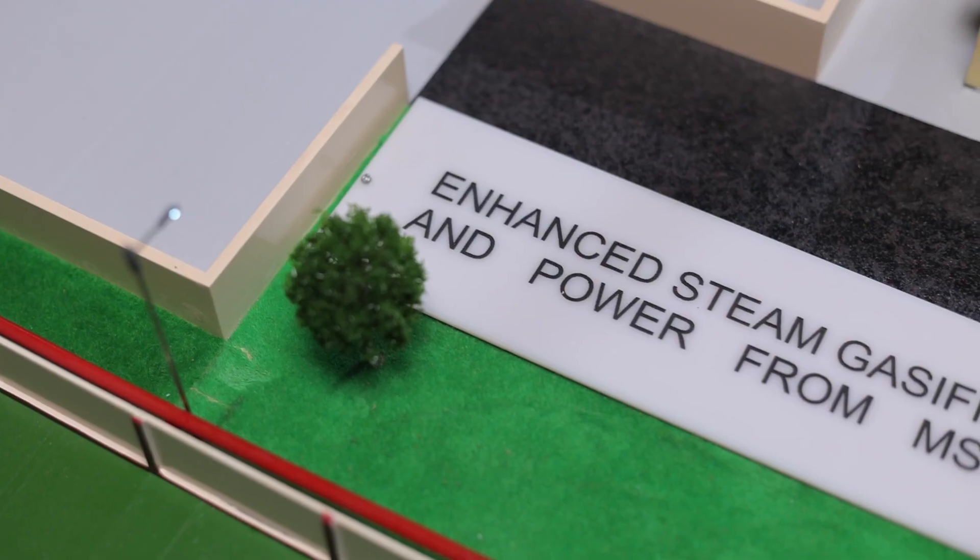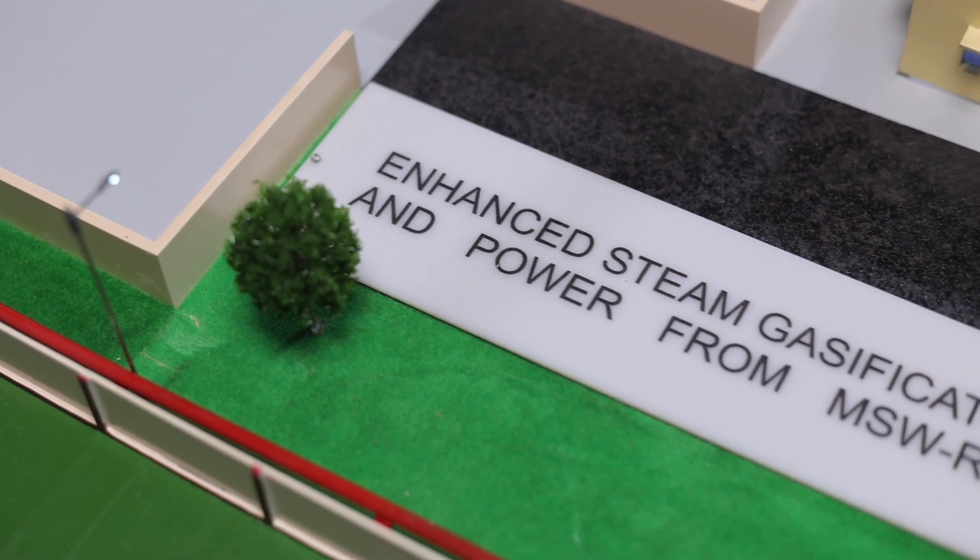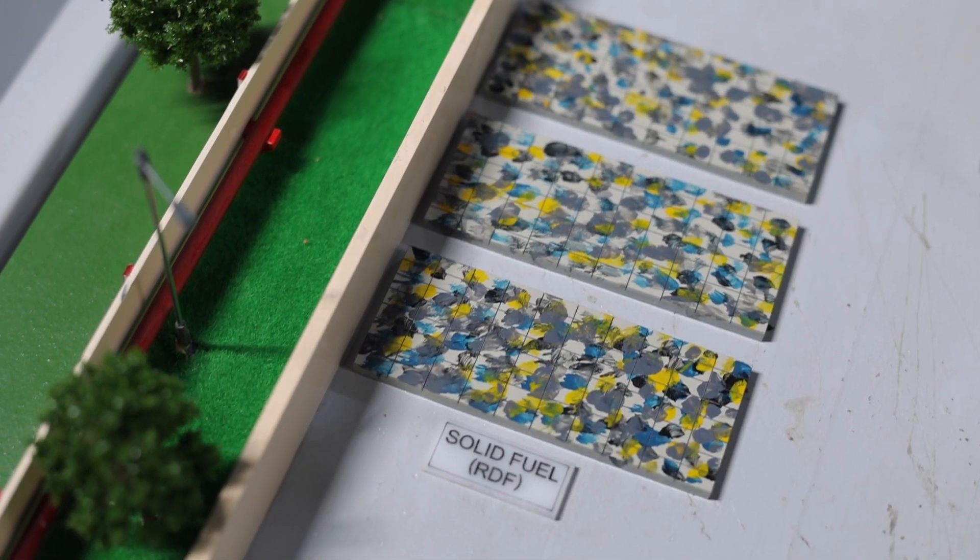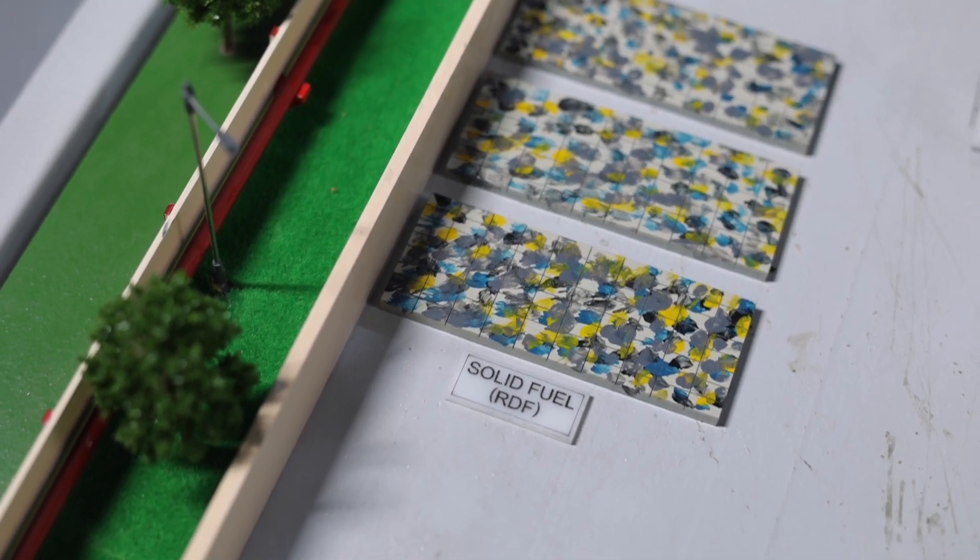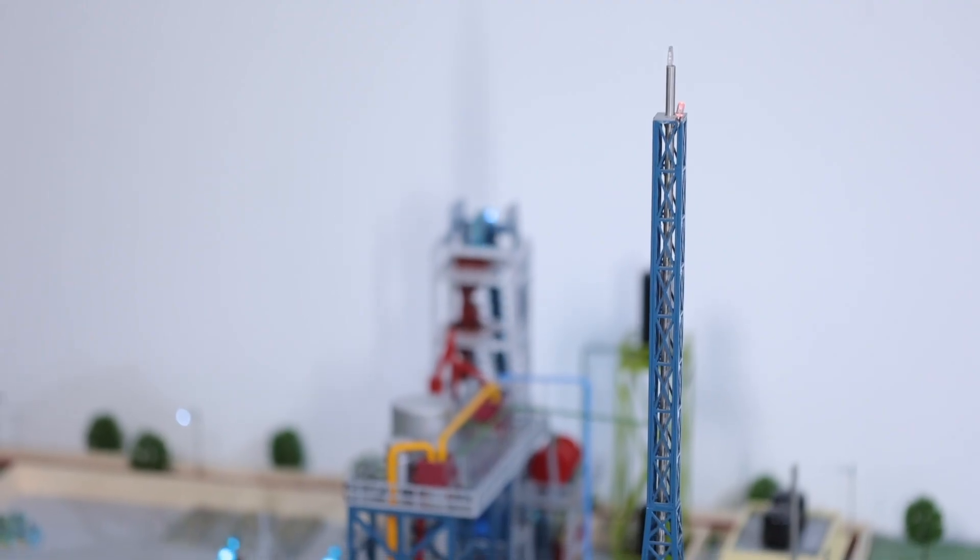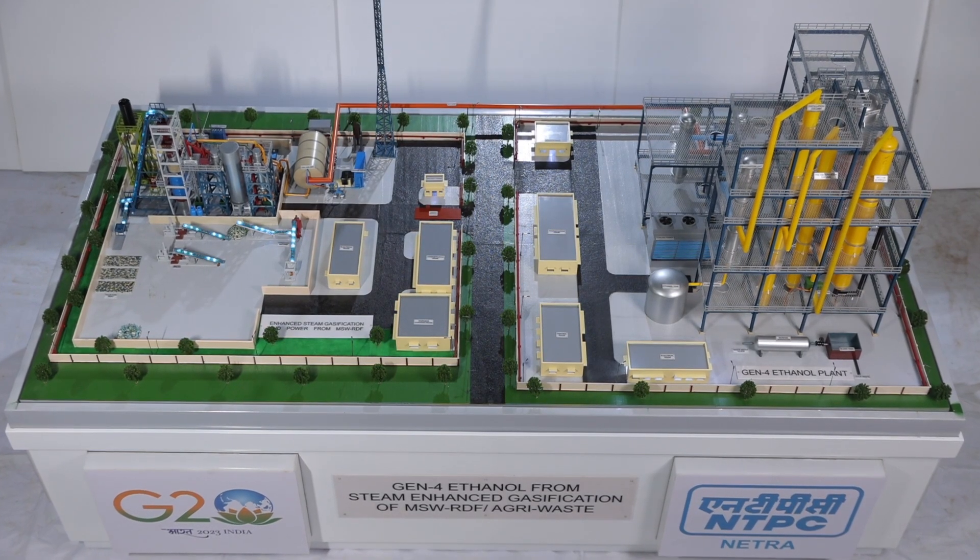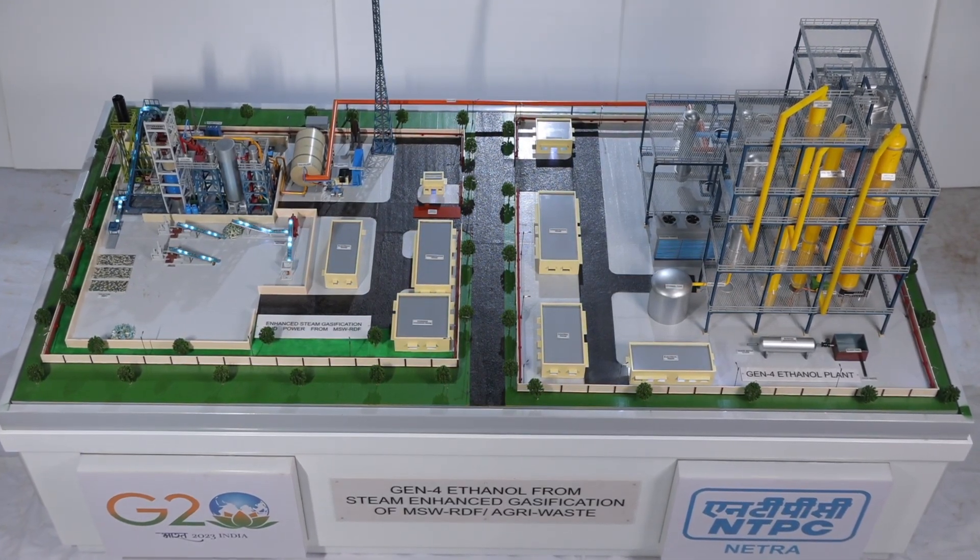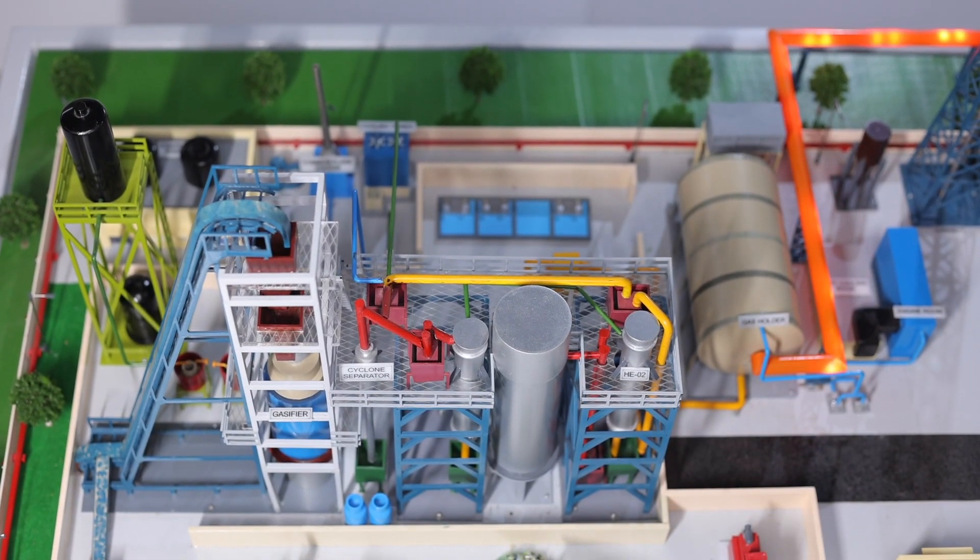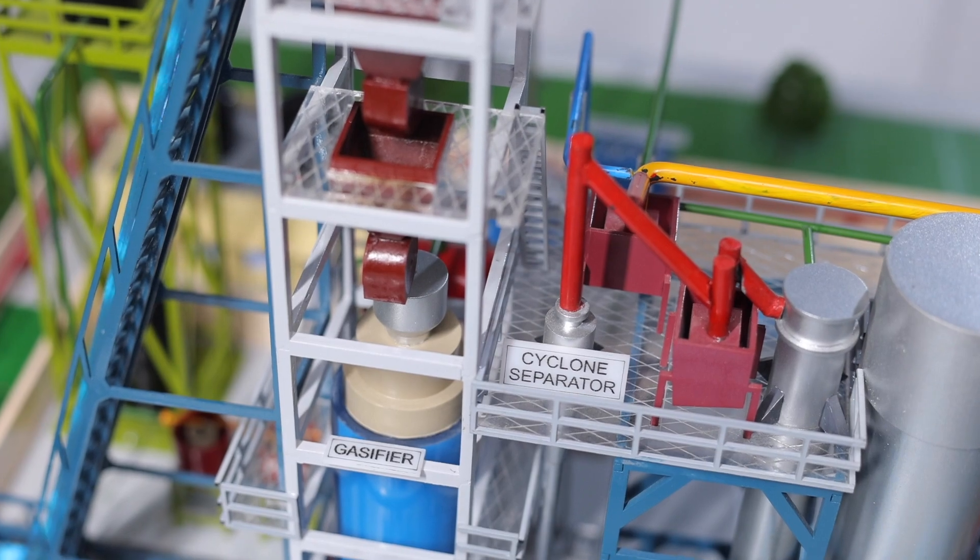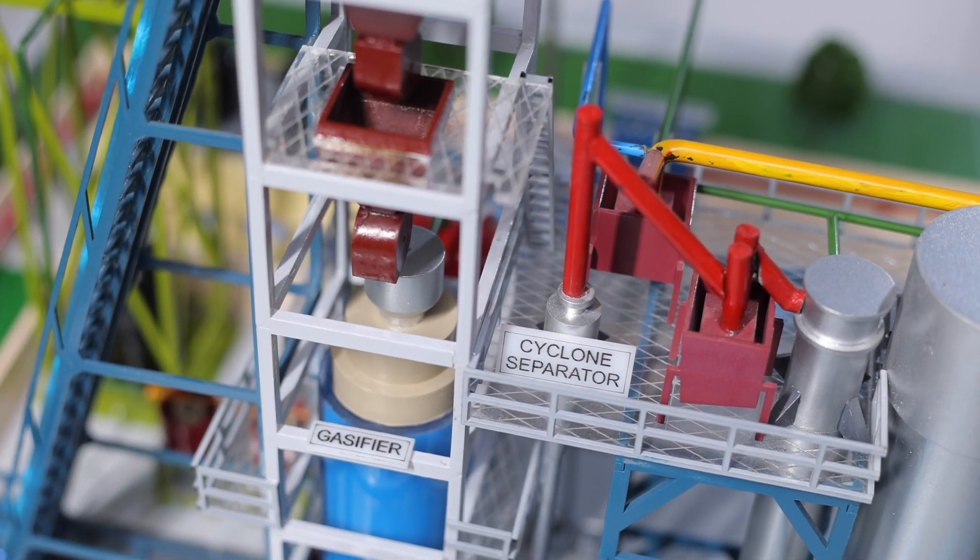Netra set up an R&D demonstration plant of MSW (Municipal Solid Waste) RDF (Refused Derived Fuel) based gasification plant having net power output of 400 KWE in 24 hours at its Netra campus in Greater Noida. The gasification plant would form the basis of ethanol production from syngas produced in the MSW RDF gasifier.